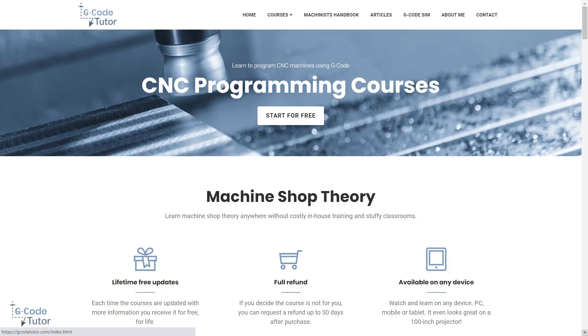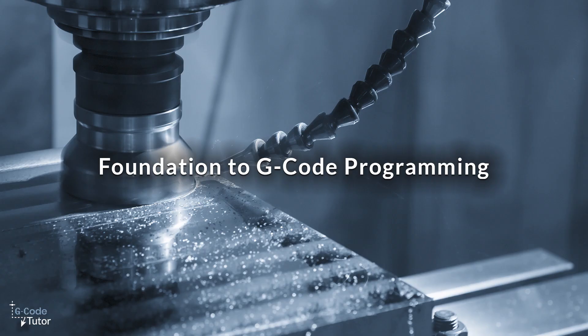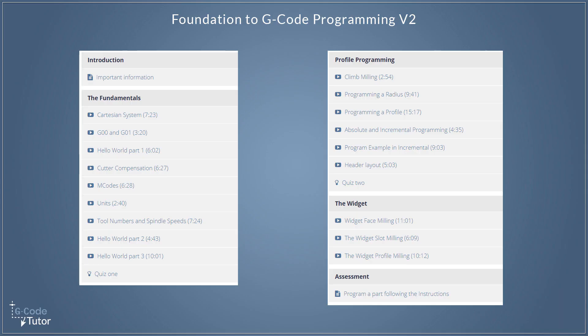Let's take a look at the machine shop theory courses on gcodetutor.com. The first one is the Foundation to GCode Programming. If you have no previous experience with programming gcode, this is where to start. It covers all the fundamentals such as the Cartesian coordinate system, moving the machine around using G00 and G01. During this course we write three separate programs and everything is explained line by line, gcode by gcode.